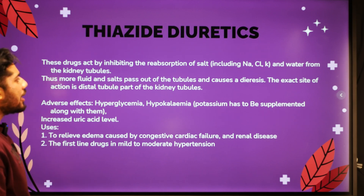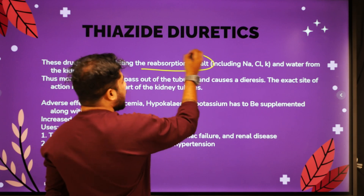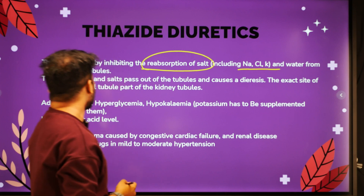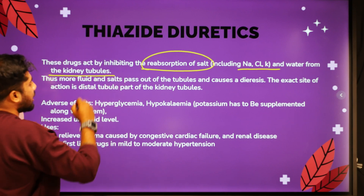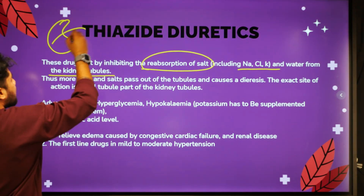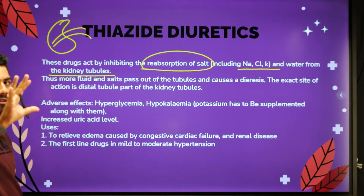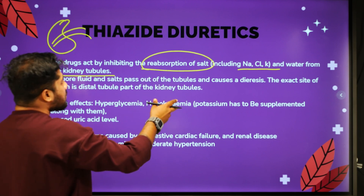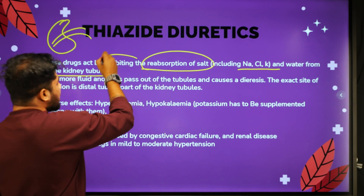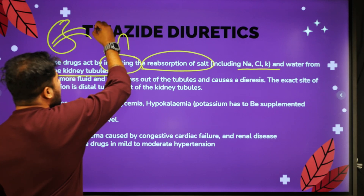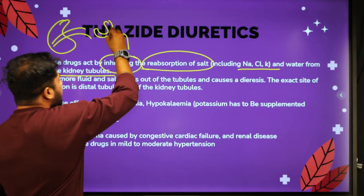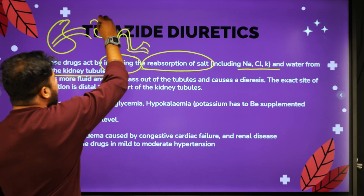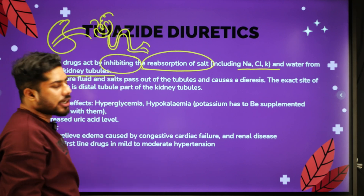Thiazide diuretics act by inhibiting the reabsorption of salt — including sodium, chlorine, potassium, and water — from the kidney tubules. We have glomerulus and nephrons. In the nephrons, reabsorption of salt is inhibited. The structure includes DCT, PCT, loop of Henle, and collecting duct. If you inhibit reabsorption of salt, more fluid and salt pass out through the tubules, causing diuresis.